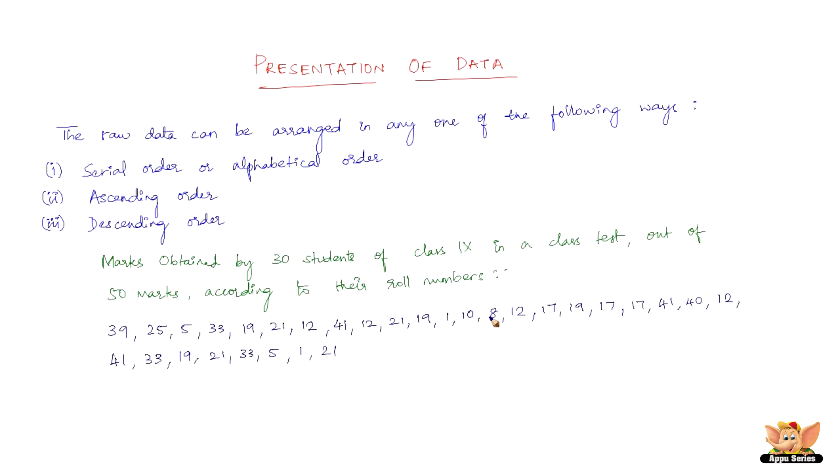Now, let the marks obtained by 30 students of class 9 in a class test out of 50 marks according to the roll numbers be 39, 25, 5, 33, 19, 21, 12, 41, 12, 21, 19, 1, 10, 8, 12, 17, 19, 17, 17, 41, 41, 40, 12, 41, 33, 19, 21, 33, 5, 1, and 21.